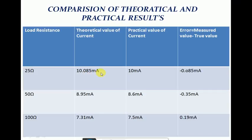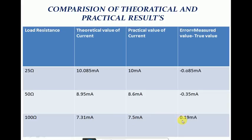When the load resistance is 25 Ω, the calculated theoretical value of current is 10.085 mA, whereas the practical value is 10 mA. The error is 0.085 mA, which is negative. When the load resistance is 50 Ω, the calculated value is 8.95 mA and the practical value is 8.6 mA, giving an error of 0.35 mA, also negative. When the load resistance is 100 Ω, the calculated value is 7.31 mA and the practical value is 7.5 mA, giving an error of 0.19 mA, which is positive.